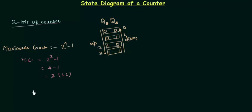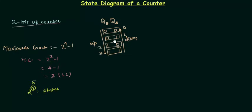To find the number of states of a counter, for example a 5-bit counter, you use the formula 2 to the power n. Just replace n by 5 and you will have the states of a 5-bit counter. In the same way for a 2-bit up counter, replace n by 2, so 2 to the power 2 gives 4 states, which we can also confirm by counting them.